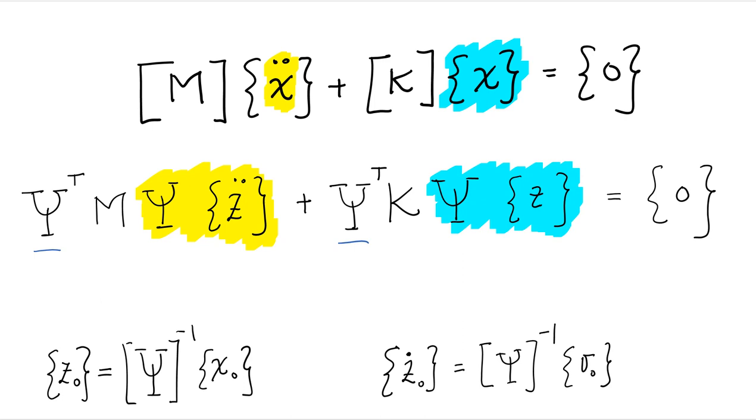By definition, phi transpose m phi is equal to the identity. And phi transpose k phi, by definition, is going to be equal to a diagonal matrix.